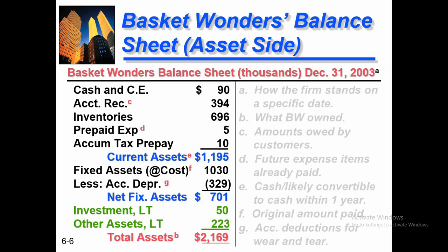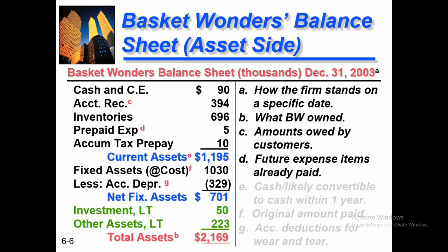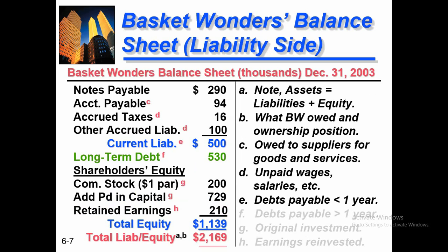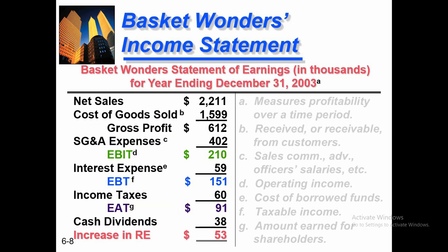Here is a sample balance sheet that we will use in our ratio analysis. Cash and cash equivalents are 98, accounts receivable 3.94, and another figure 96.95, giving current assets total of 11.95. Net fixed assets are 0.701, so total assets are $21.69 — this is the left-hand side of the balance sheet. On the right-hand side, total current liabilities are 500, long-term debt is 530, and total equity is 11.39, giving total liabilities and equities of 21.69. These figures will be used in our ratio analysis to identify where the company stands.